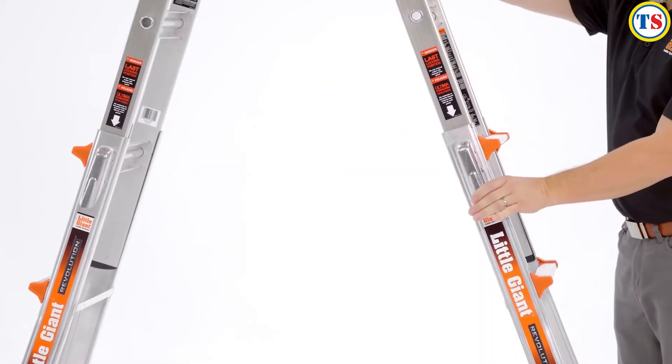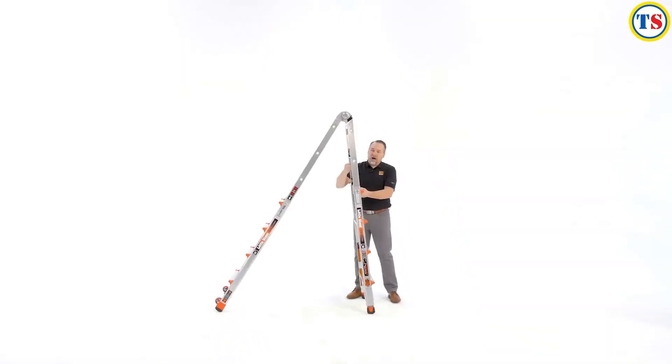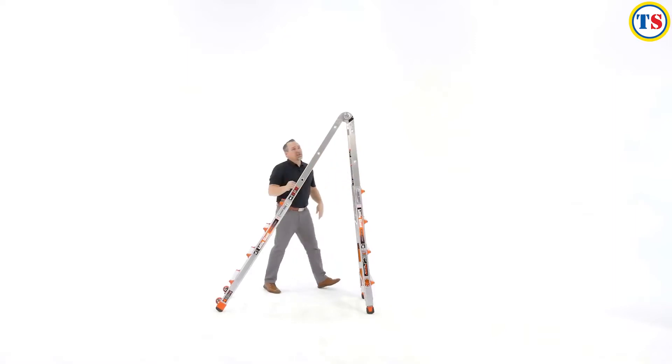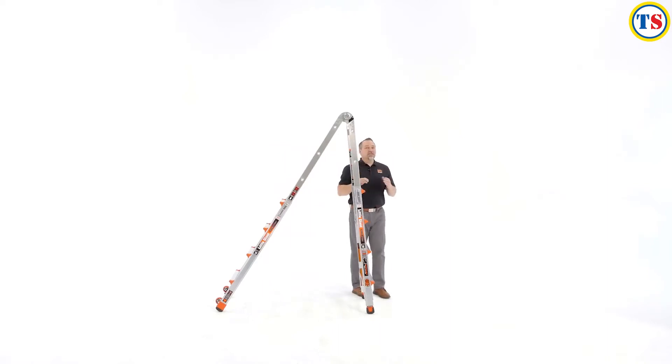To use the ladder in what we call the 90 degree position, I'll bring it down just one rung. And now in this situation, I would climb up the opposite side, and it would bring me just about square, which allows me to face my work like I should, but it also eliminates any unnecessary overreaching.